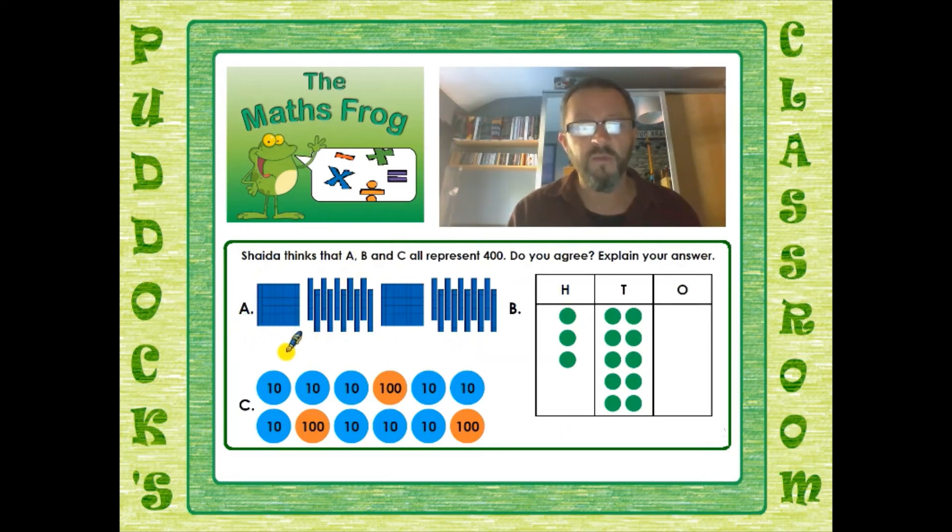First you need to have a look and check whether or not she's right. Do they all represent 400? Well in this one A is using Dean's material, our blue plastic materials. We can see there's 100 here, 100 here, so that's 200, and another 100, 200. What about all these? Now these are tens. How many tens have we got? We've got 1, 2, 3, 4, 5, 6, 7, 8, 9, 10 tens.